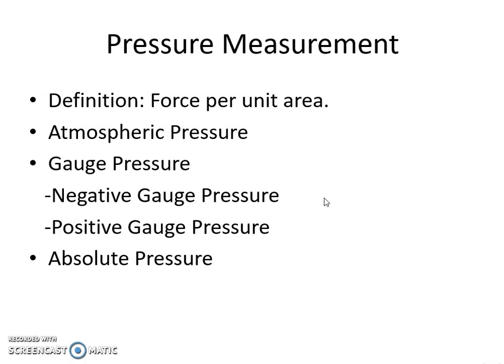The atmospheric pressure is also known as barometric pressure. The atmospheric pressure at sea level is called as standard atmospheric pressure. It is to be noted that the local atmospheric pressure may be different than the atmospheric pressure at sea level.